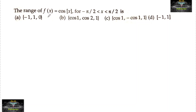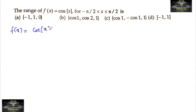Find the range of f(x) = cos(⌊x⌋) for minus π/2 less than x less than π/2. So the given function is f(x) = cos of step x.